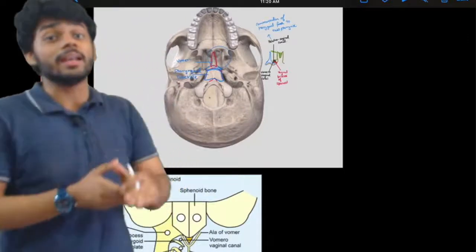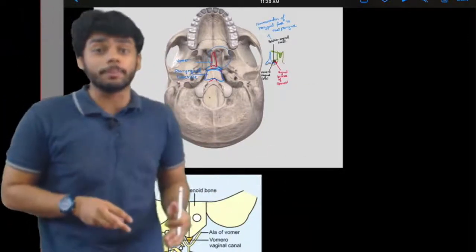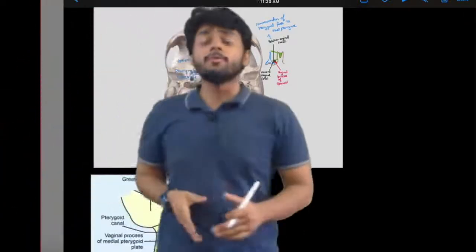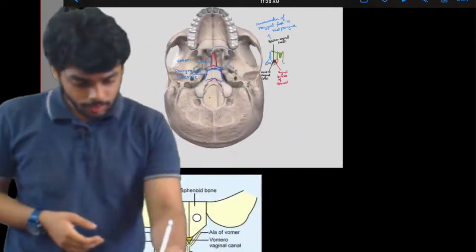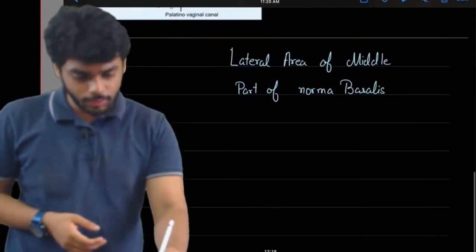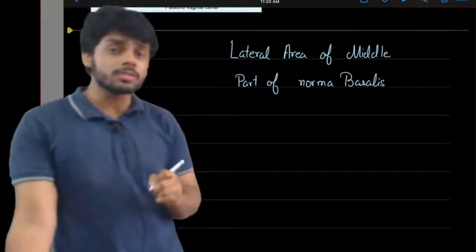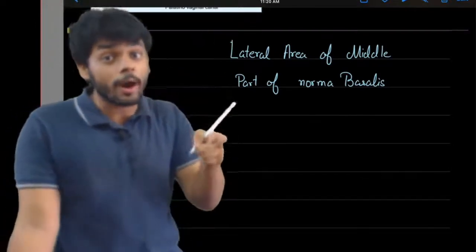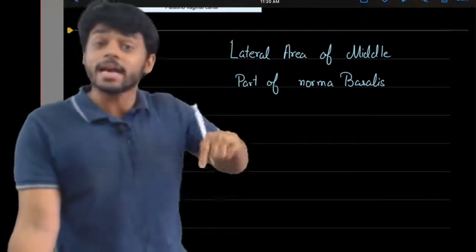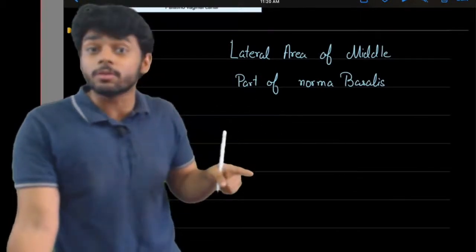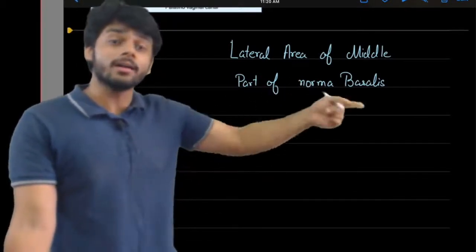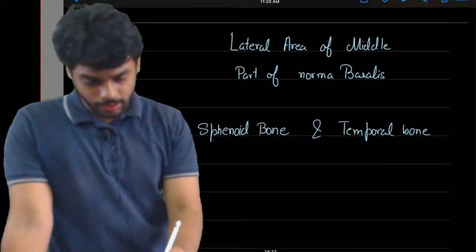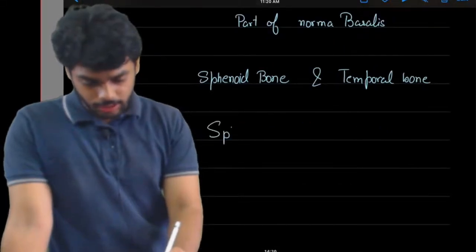Now we will study the lateral area of the middle part of Norma Basalis. The bones we study here are the sphenoid bone — including the pterygoid process, both medial and lateral, as well as the greater wing of the sphenoid — and the temporal bone. We will study each bone one by one.